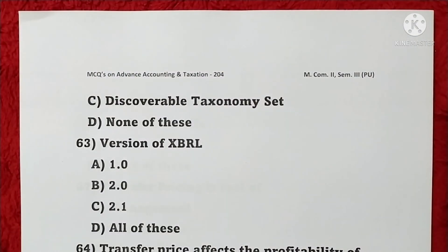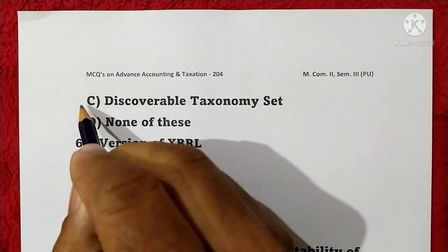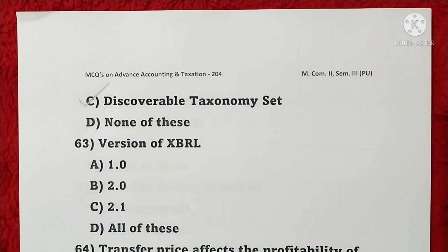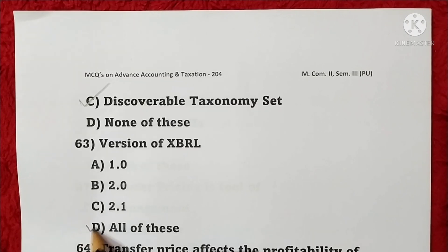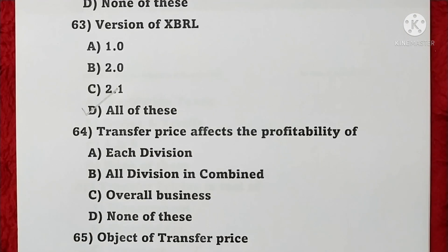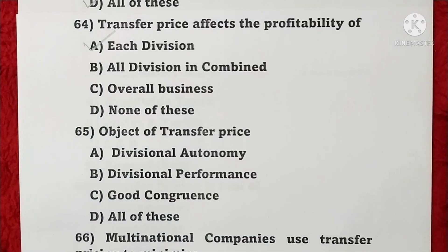Question 63: Versions of XBRL include 1.0, 2.0, and 2.1, and all of these are correct answers — option D is correct. Question 64: Transfer price affects the profitability of each division — option A is correct.